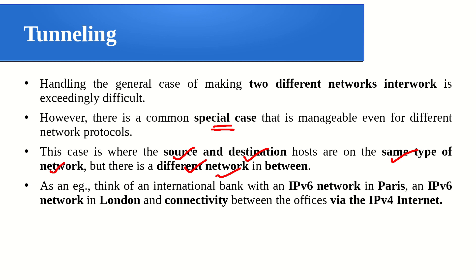As an example, consider an international bank with one branch located in Paris using an IPv6 network, and another branch located in London also using IPv6. Since both source and destination are using the same network — IPv6 — but the connectivity between these two offices is through IPv4, this is exactly where we can depend on tunneling.